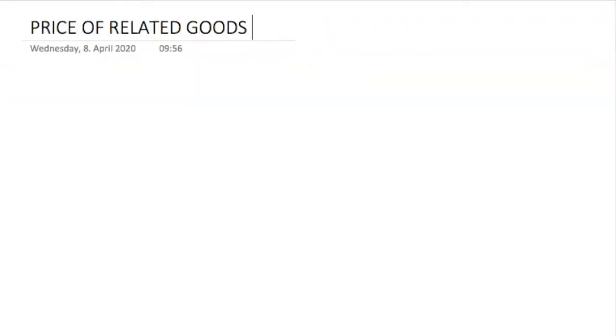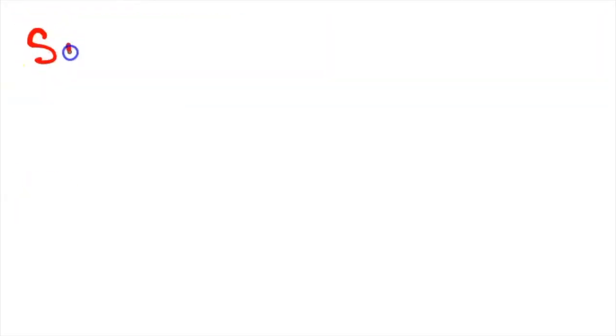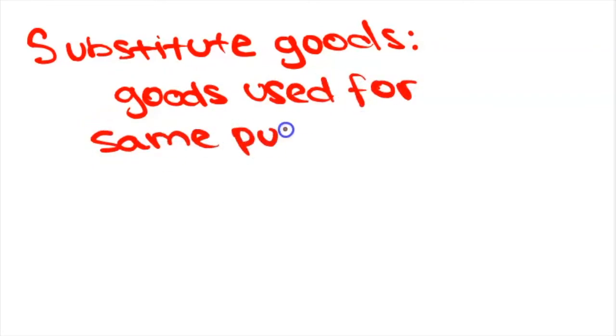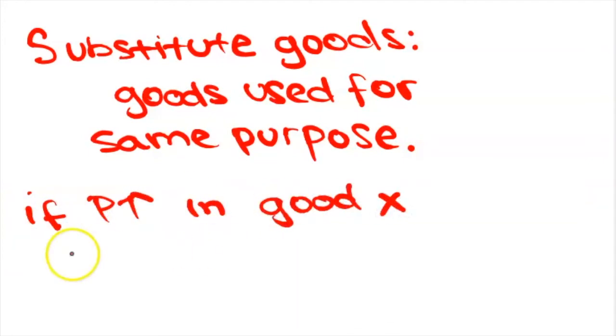The third determinant is prices of related goods. There might be substitute goods and there might be complementary goods. Consumer substitutes are two goods that provide the same purpose so they can be interchanged. For instance, tea and coffee.